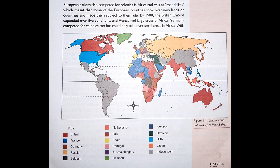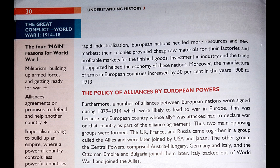By 1900 the British Empire had expanded over five continents, and France had large areas of Africa. Germany competed for colonies too but could only take over small areas in Africa. With rapid industrialization, European nations needed more resources and new markets. Their colonies provided cheap raw materials for their factories and profitable markets for finished goods, and investment in industry and trade helped the economy of these nations.